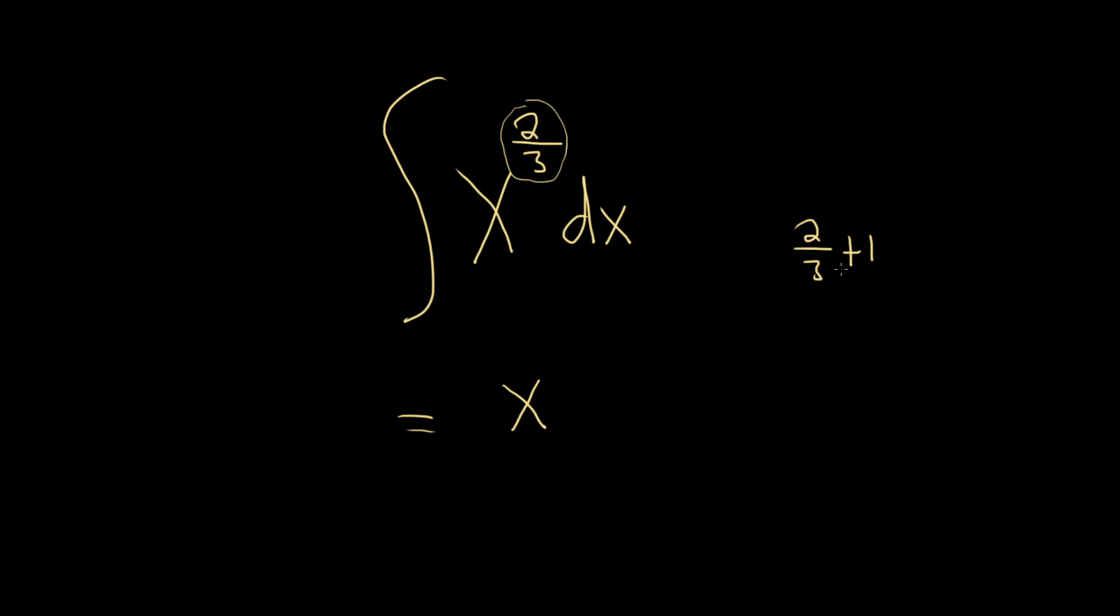So it's better to do it on the side. If you're taking 2 thirds and you're adding 1, you're really doing 2 thirds plus 3 thirds. So 2 plus 3 is 5. So you put a 5 thirds here.